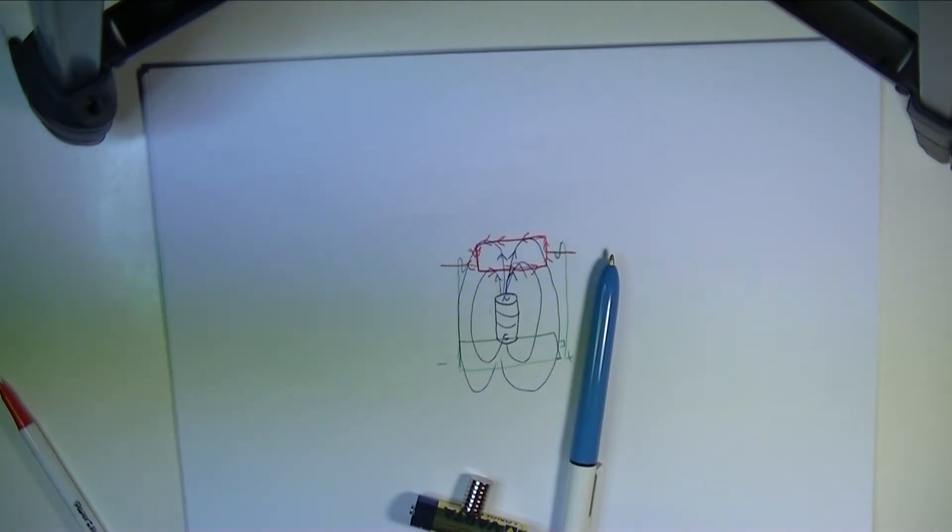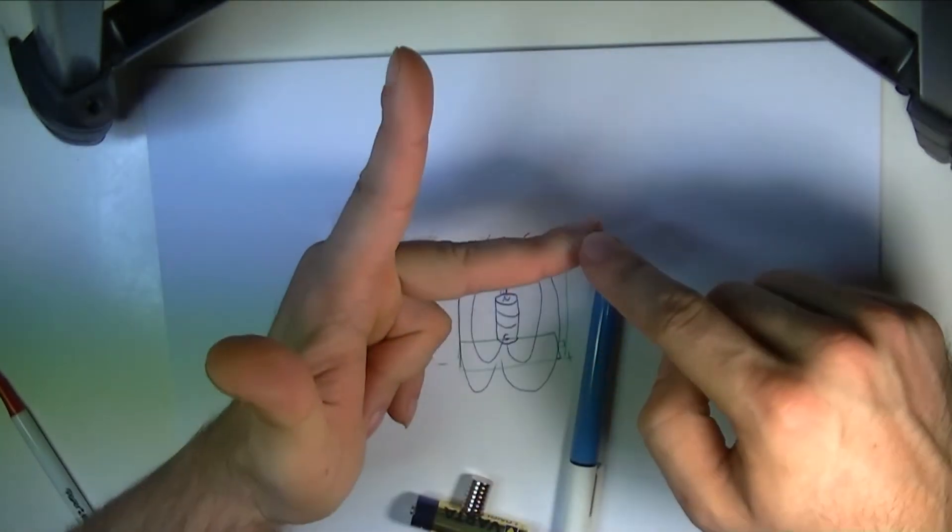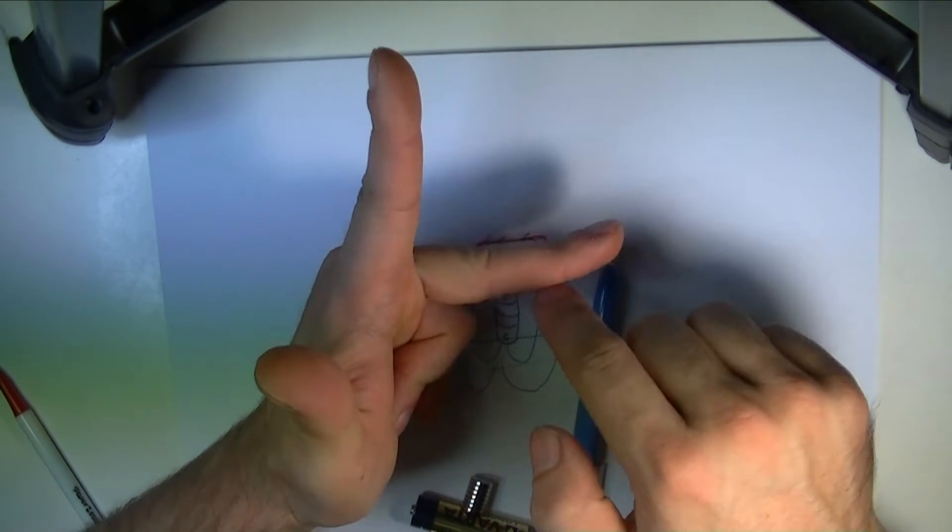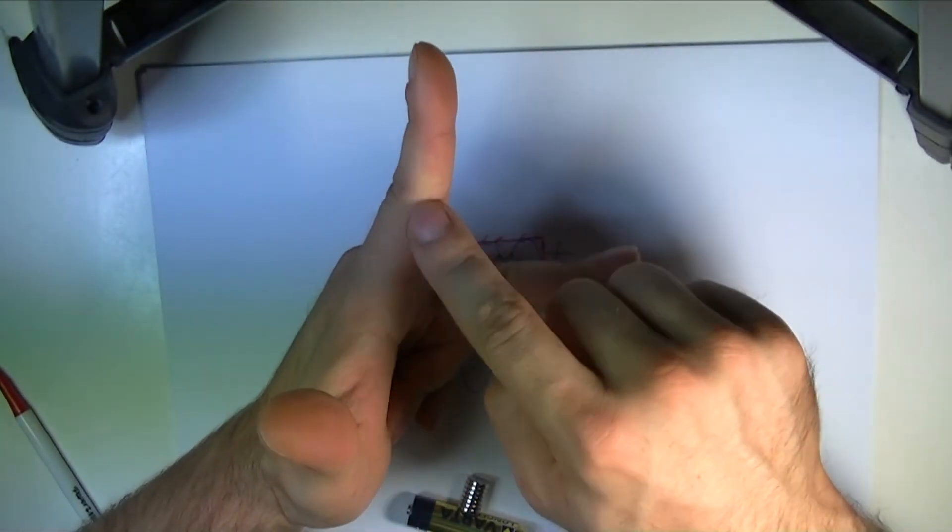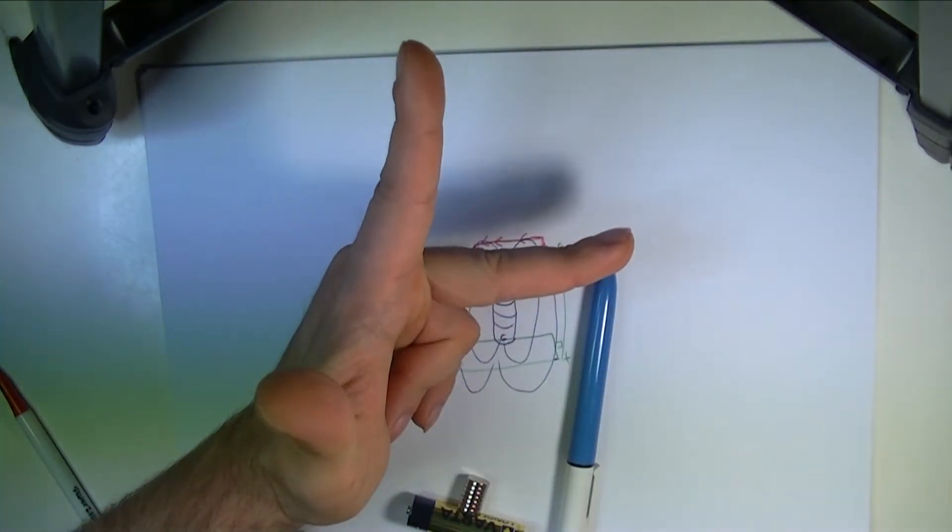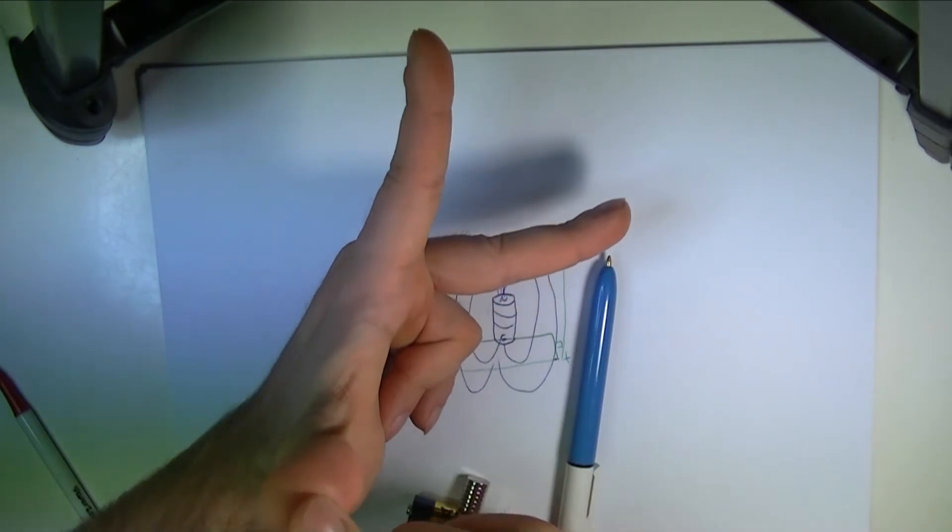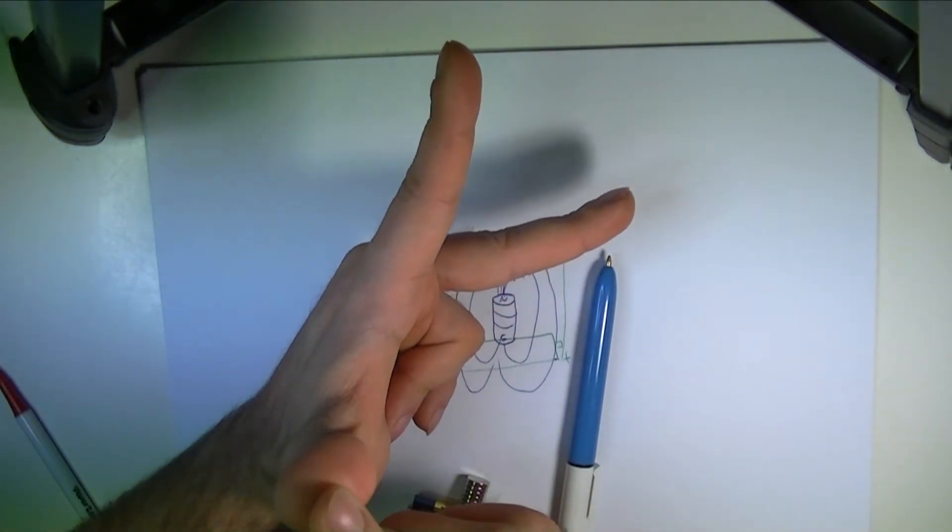Where if you take your left hand and you have this finger indicating the direction of the current, this finger indicating the direction of the magnetic field, your thumb is going to give you where the direction of the wire is going to go.